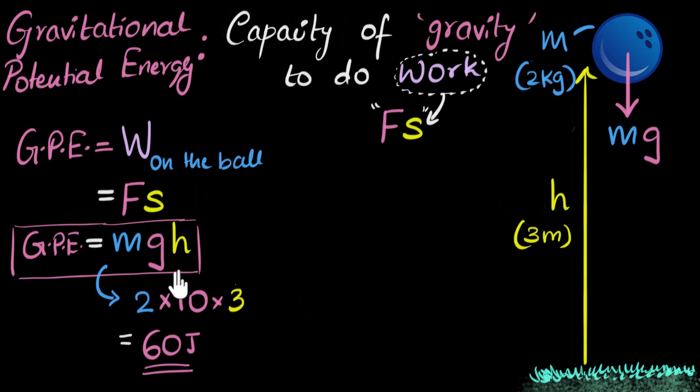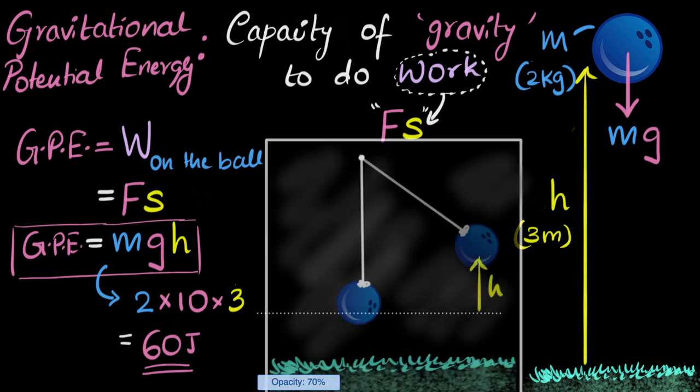And if you ever get confused about from where should you calculate that height, where is your ground in general, then you are free to choose whichever level as you want as your ground. And what I like to do is that in any experiment, I ask myself, what is the lowest point that object can reach in that experiment? And then call that as my ground and calculate the height from there to calculate potential energy.